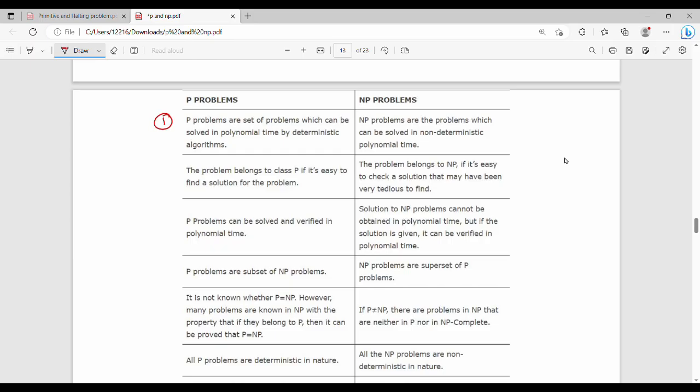First point: P problems are set of problems which can be solved in polynomial time by deterministic algorithm. NP problems are the problems which can be solved in non-deterministic polynomial time. Deterministic polynomial time is P and NP is non-deterministic polynomial time.